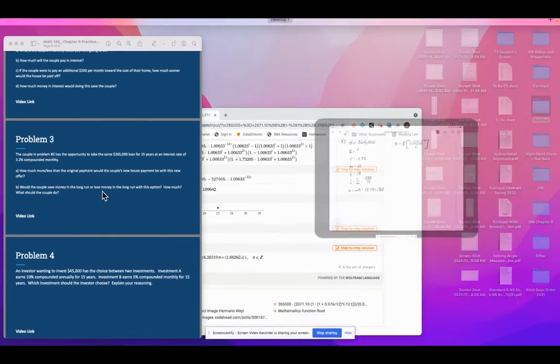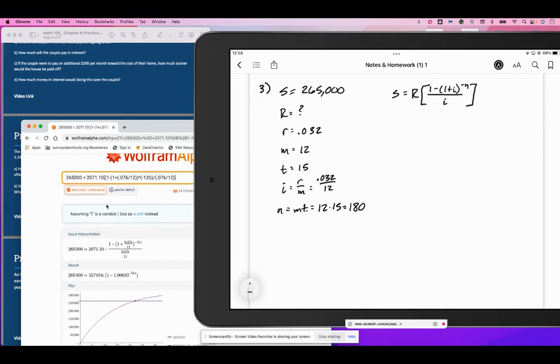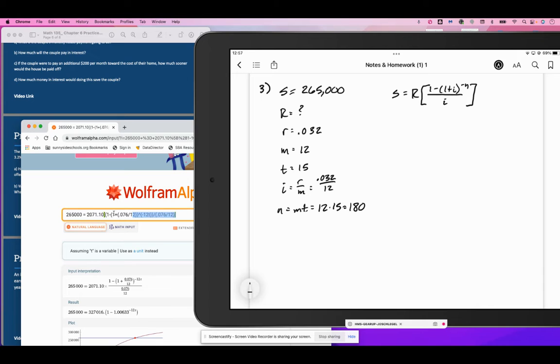We will have 265,000 equals r times 1 minus 1 plus 0.032 over 12 to the power of negative 180, over 0.032 over 12.